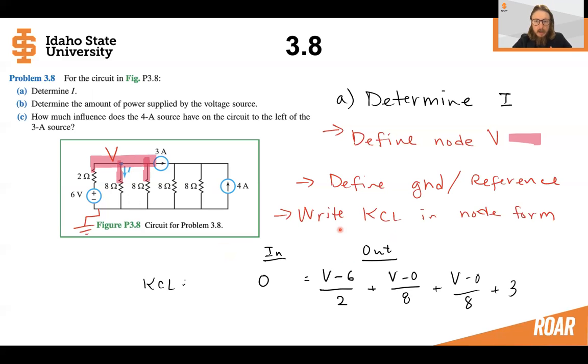Then I'm going to write KCL in node form. So I'm going to have defined this as nothing coming in and everything going out. Remember, we'll always have this equal to zero. So going out, I'm going to have the voltage minus the 6 volt source down to the ground divided by this 2 ohm resistor. So that's the current down this branch. Down this branch is this voltage minus zero, because it's the ground or reference, over the 8 ohm resistor. And then we'll have a voltage minus the zero ground over this 8 ohm resistor. And then the last part is the 3 amp source that's exiting that node. Okay, so we've written KCL in node form.